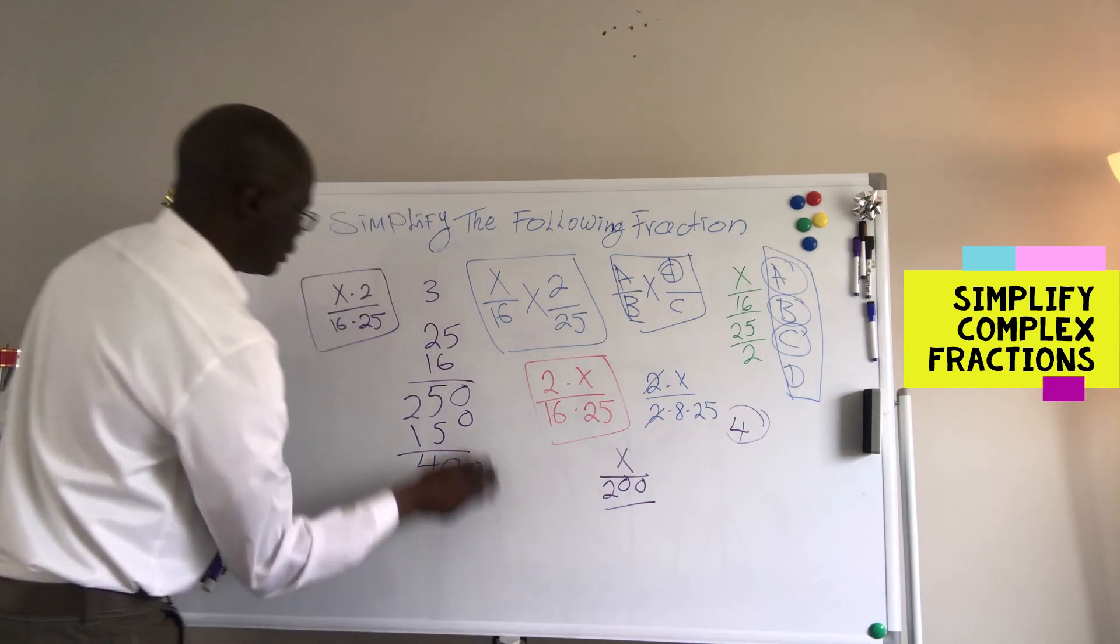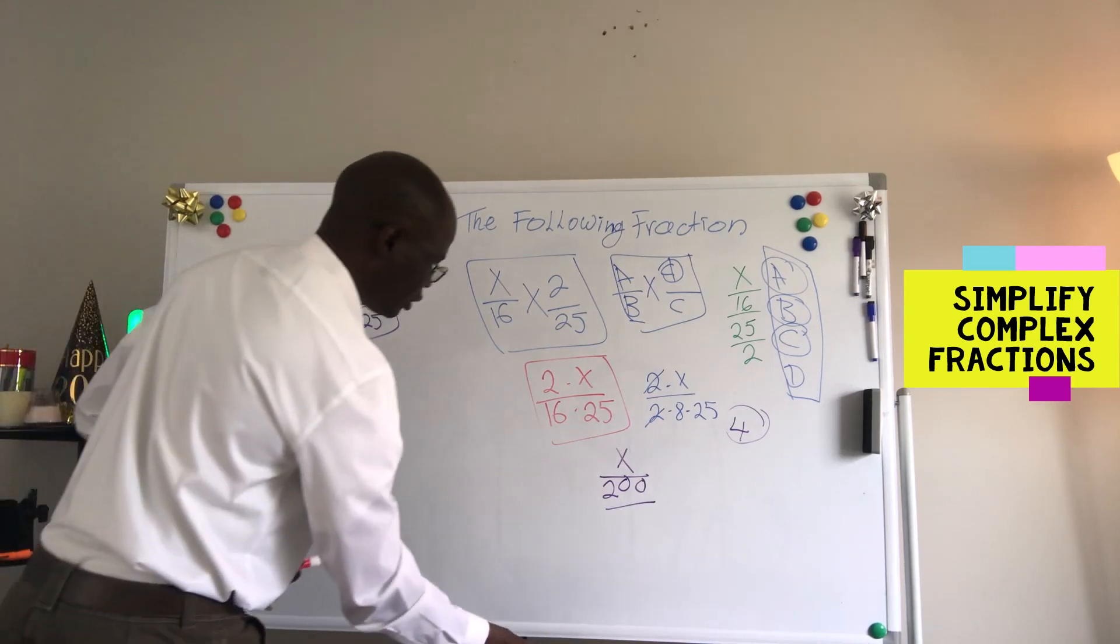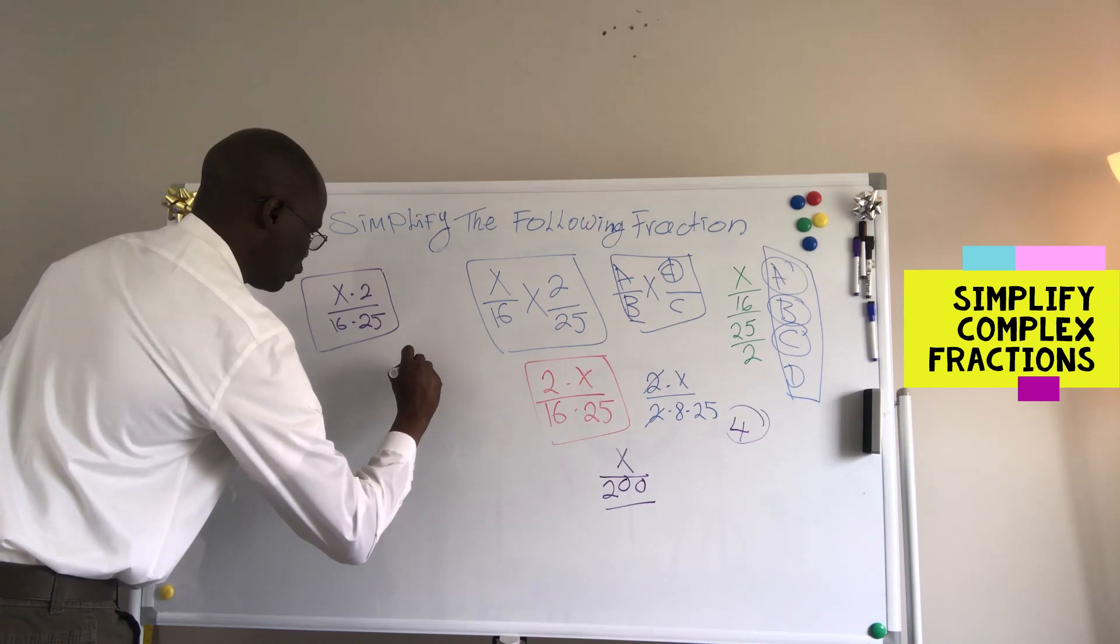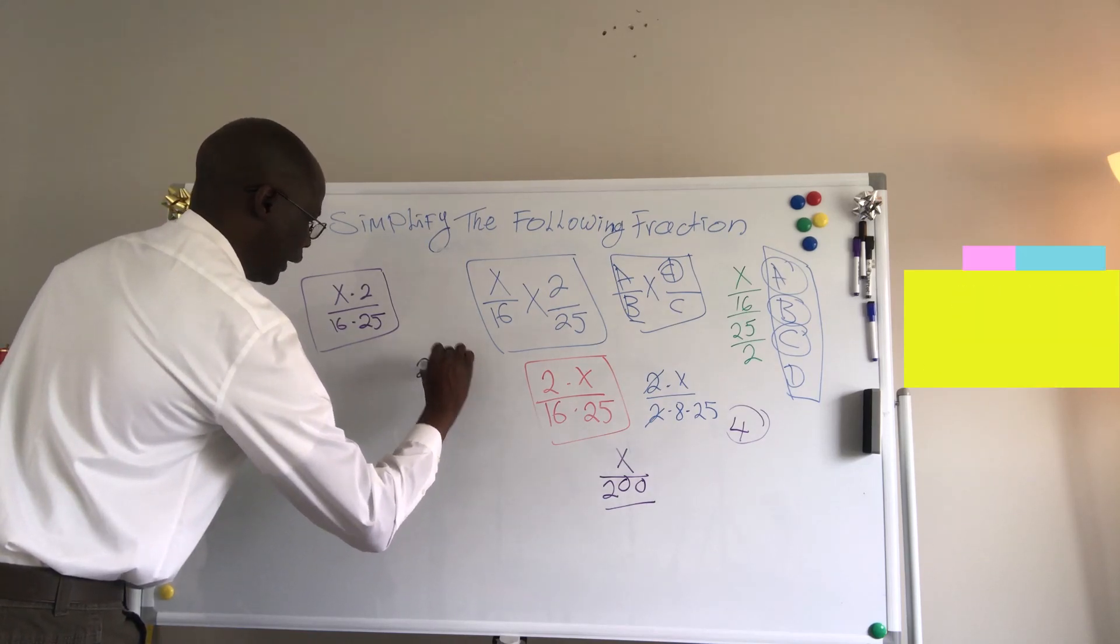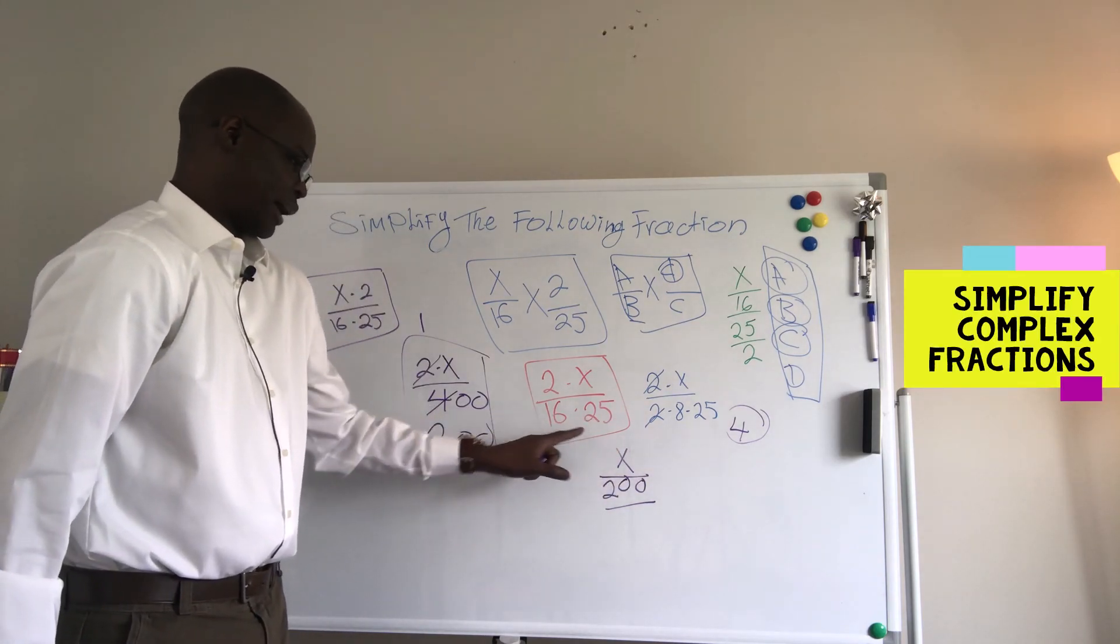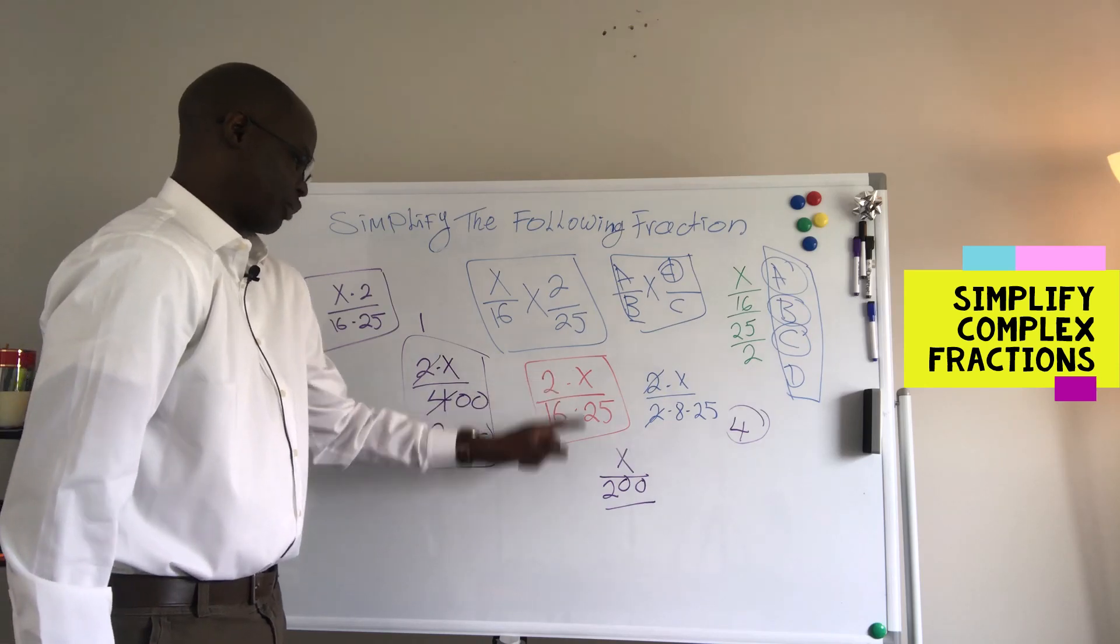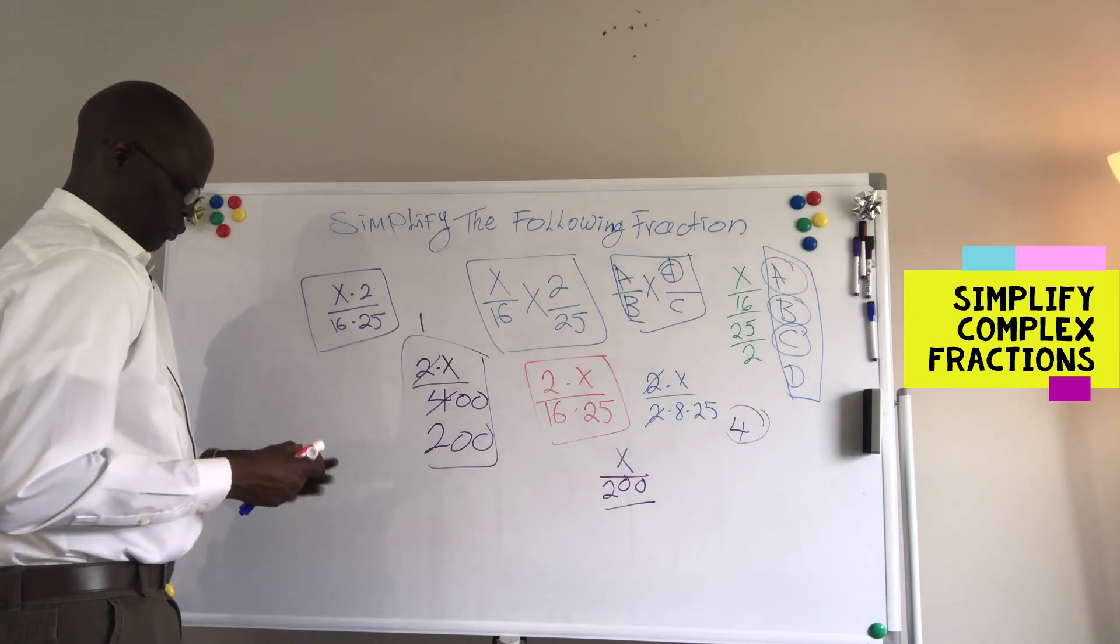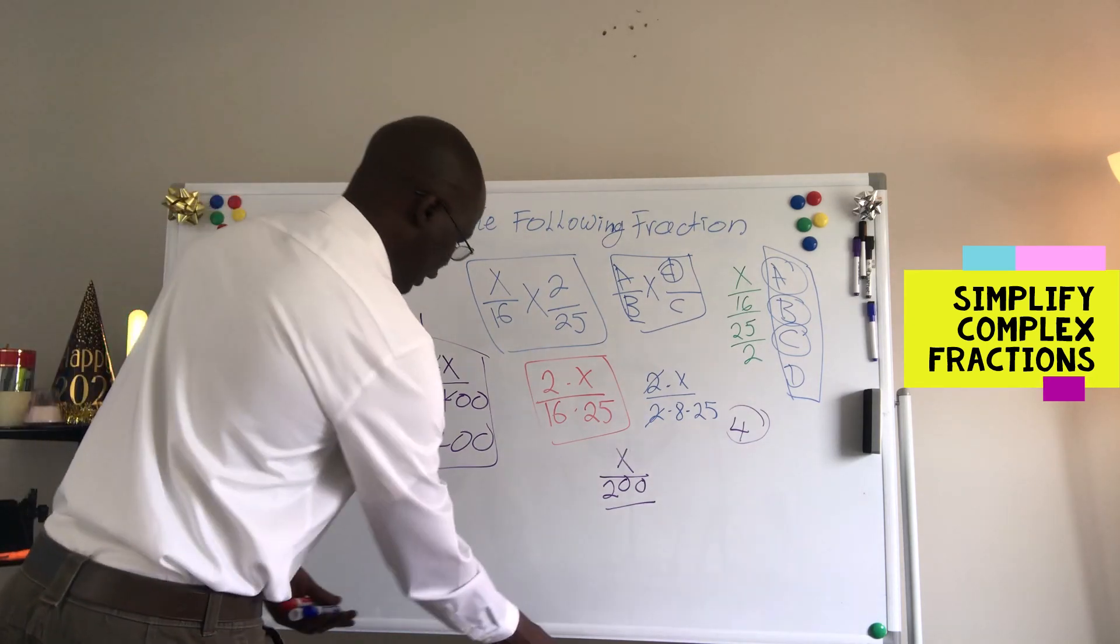So let's go back. If we have 400, so we will still have 2x which is multiplied by x. Or you can multiply 16 times 25, you get 400, and then you divide 2x by 400 and you get 200. It's the same thing. So whatever you do, at the end you get the same answer.